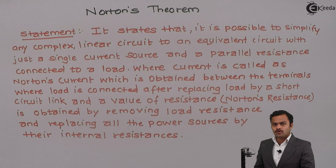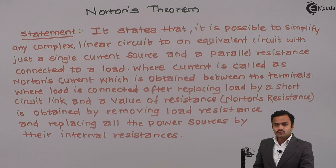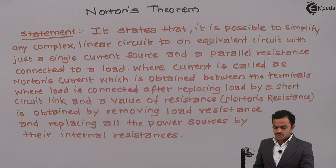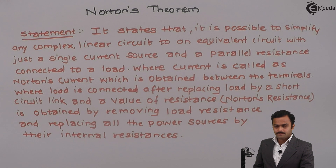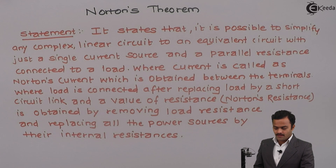Let's see what the statement of Norton's theorem says. It states that it is possible to simplify any complex linear circuit to an equivalent circuit with just a single current source and a parallel resistance connected to a load, where the current is called Norton's current, obtained between the terminals where the load is connected after replacing the load by a short circuit link, and the resistance, called Norton's resistance, is obtained by removing the load resistance and replacing all power sources by their internal resistances.